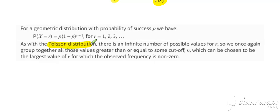As is the case with a Poisson, there's an infinite number of possible values of R. So once again, we group together all those values greater than or equal to some cutoff value and work out that last cell by subtracting the rest, by taking away the rest from 1.